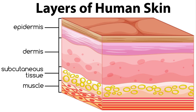This is the anatomy of the skin. Mammalian skin is composed of two primary layers: the epidermis, which provides waterproofing and serves as a barrier to infection, and the dermis, which serves as a location for the appendages of skin.